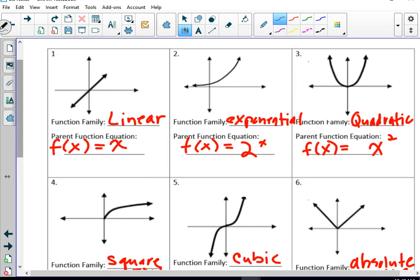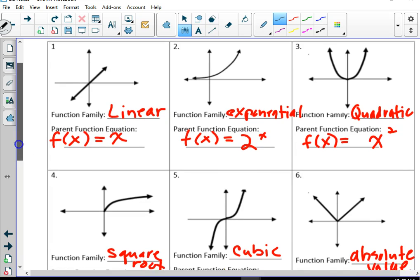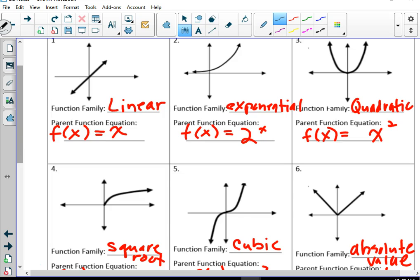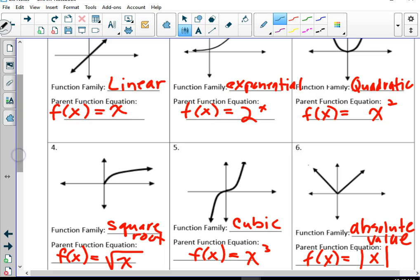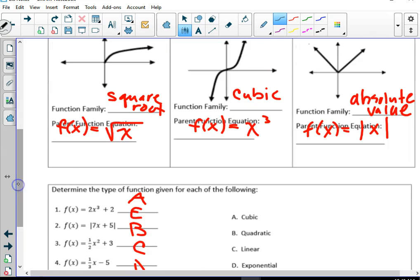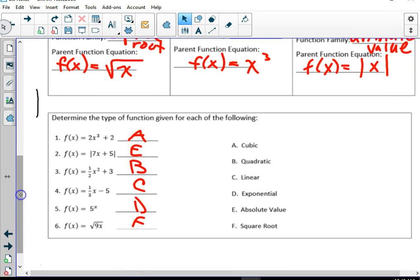Okay, so this is a summary page. It's like a quick reference page. So function family number 1 is linear, y equals x. Function family number 2 is exponential, f of x equals 2 to the x. 3 is quadratic, x squared. 4 is square root, square root of x. 5 is cubic, x cubed. And 6 is absolute value. Put the absolute value bars.